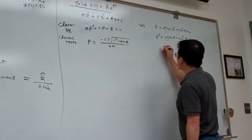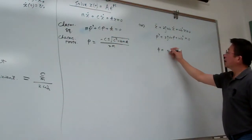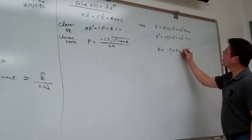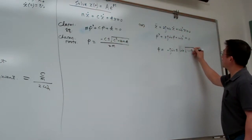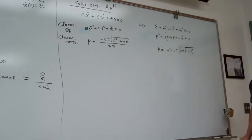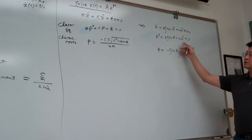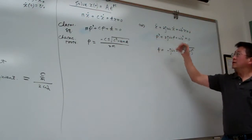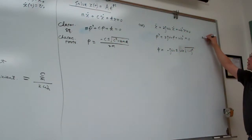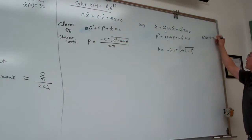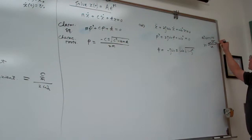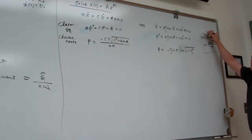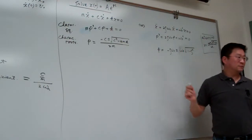For the normalized form, the roots are: p = -zeta·omega_n ± omega_n·sqrt(zeta² - 1). Using the quadratic formula template a·x² + b·x + c = 0, giving x = (-b ± sqrt(b² - 4ac)) / (2a), you can plug in and get this form easily.